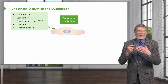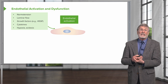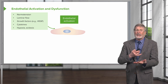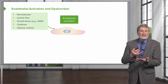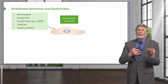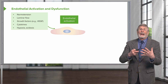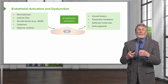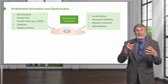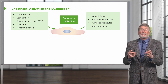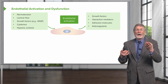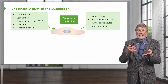This gets back to thinking about the normal health and maintenance — the care and feeding — of your endothelial cells. Normal tension, normal blood pressure, normal laminar flow, normal growth factor production by underlying fibroblasts and macrophages, normal cytokine production, and normal levels of oxygen and pH lead to a healthy endothelium. That endothelium will make appropriate levels of growth factors, vasoactive mediators controlling vessel tone, adhesion molecules, and anticoagulants so that blood stays in a liquid phase.